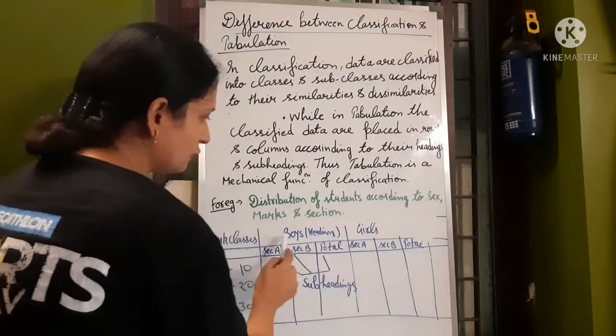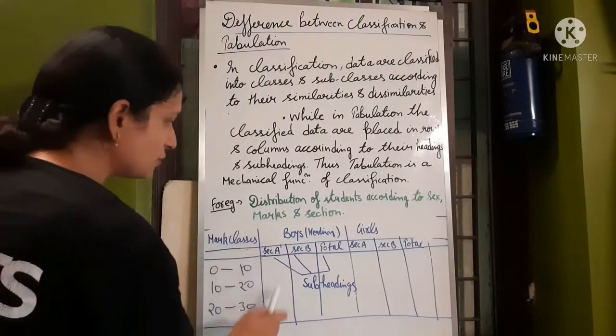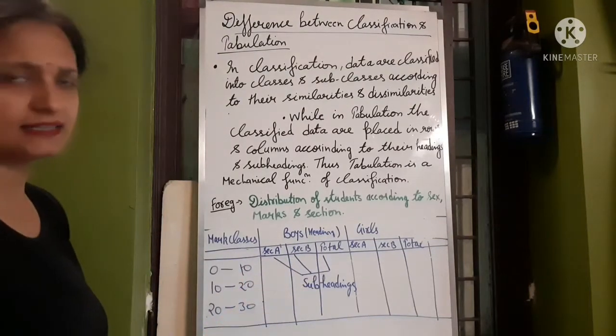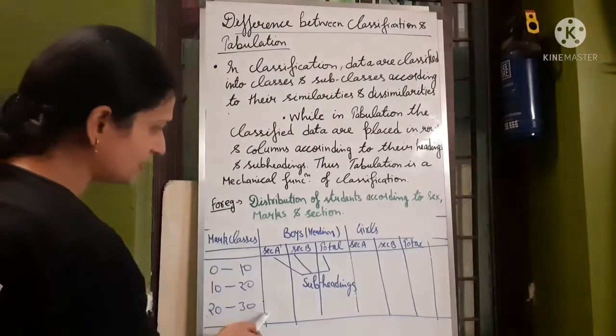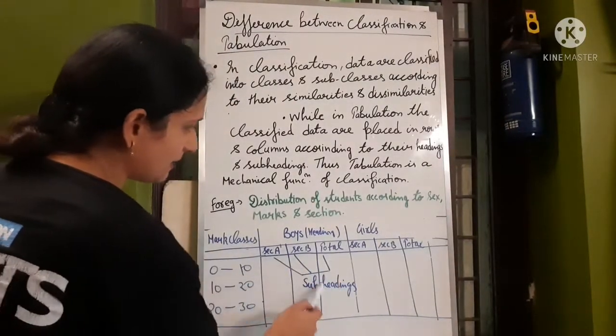Now look, boys and girls. These are your headings. What are the subheadings? The boys in 10th class. The 10th class is section A, section B and the total. These are our subheadings.